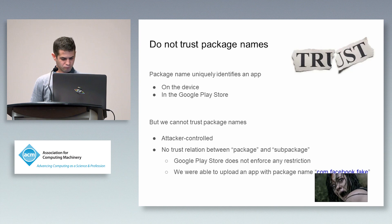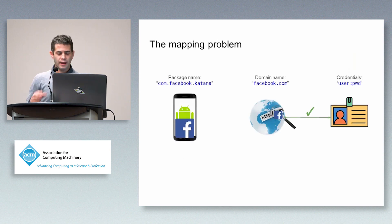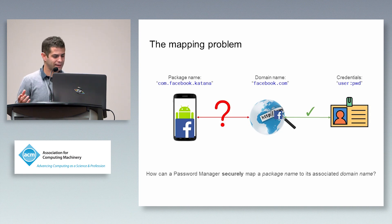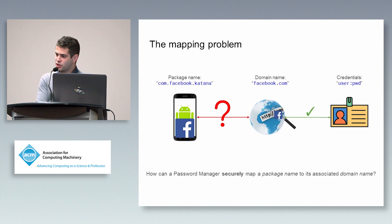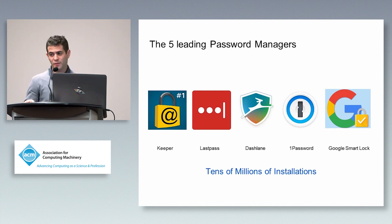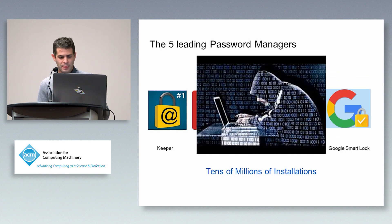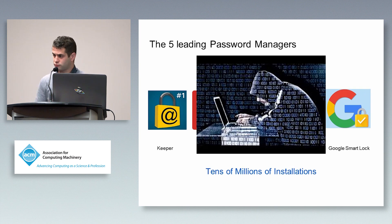Password managers in the mobile world are facing a mapping problem. In the web world, mapping credentials to a domain is safe. But the question is: how can the password manager — given that the package name is attacker-controlled — securely map the package name to a domain? We investigated the five leading password managers to discover how they work under the hood. We reverse-engineered all of them, and all of them have tens of millions of installations on the Google Play Store.